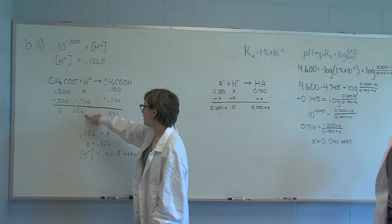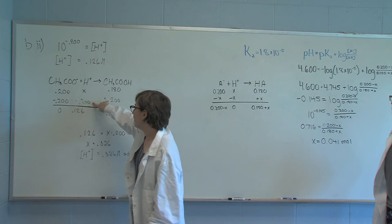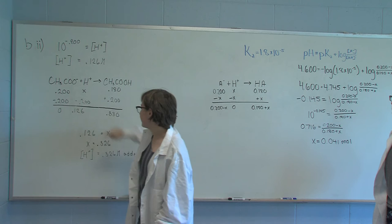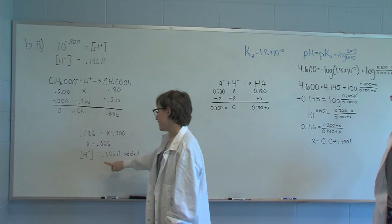If we put that in at the end of the RICE table, put in X for the initial mole of H, and then subtract the .2 mole of the acetate that's used up in the reaction, we get this equation, which we can just solve with algebra to find that the concentration of H plus needed is .326 molar, and because it's in one liter of solution, we can use molar as the same thing as moles.